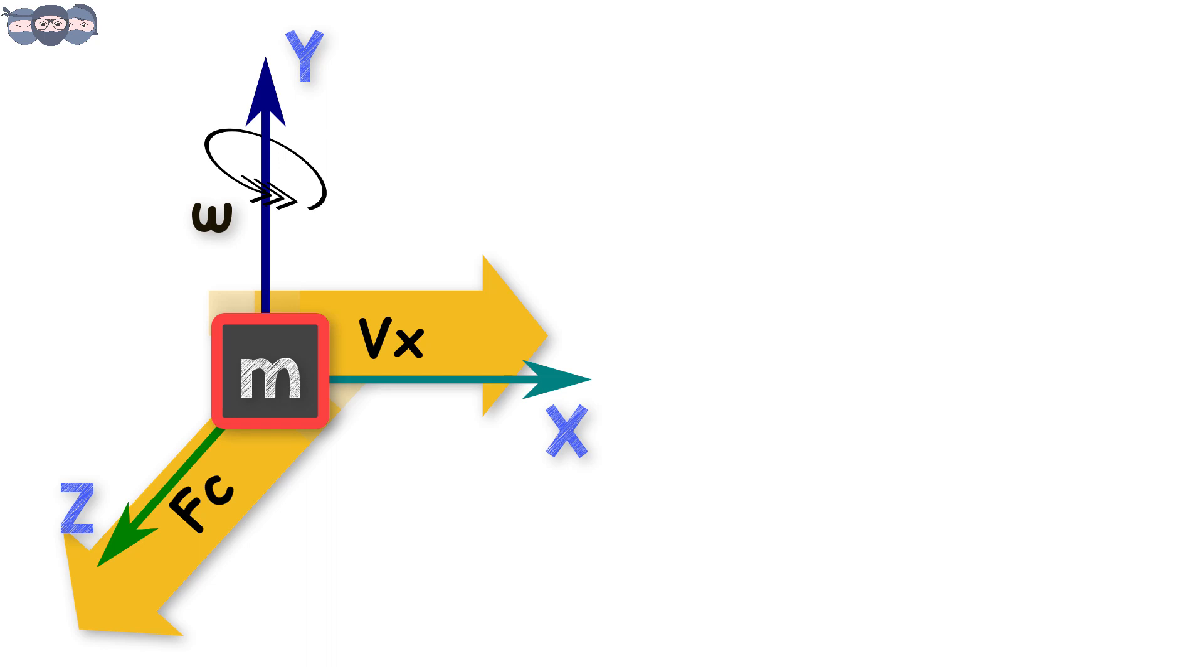This Coriolis force is a vector quantity and is perpendicular to both the velocity in x direction and the angular velocity in y direction. The magnitude of the Coriolis force is proportional to the mass of the body m, velocity vx, and angular velocity omega.